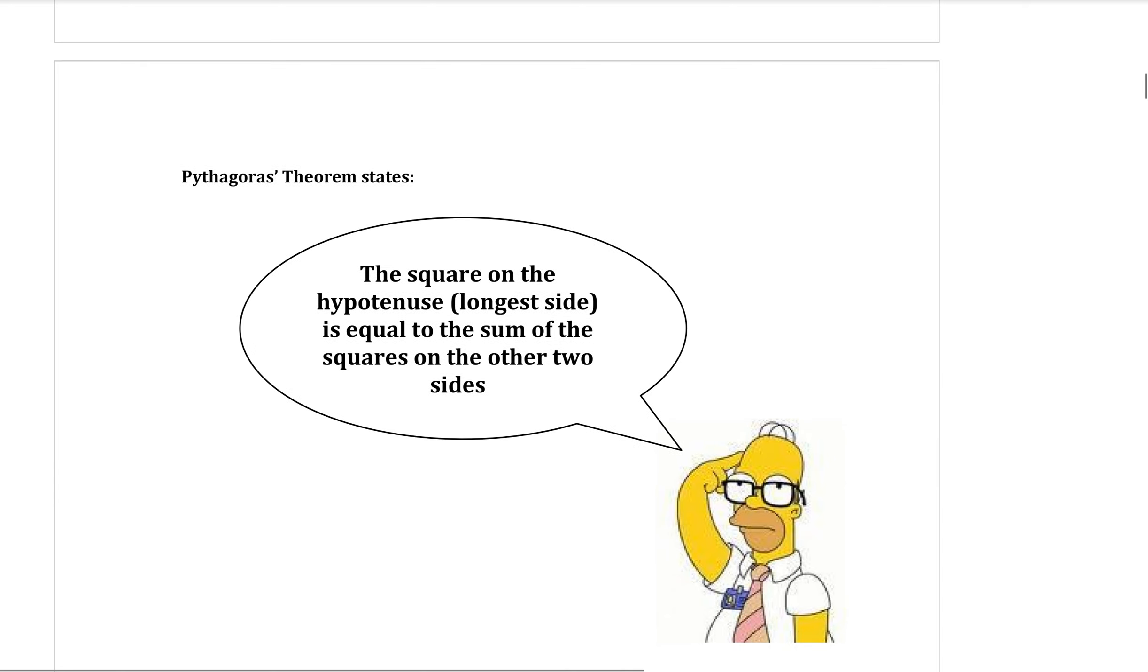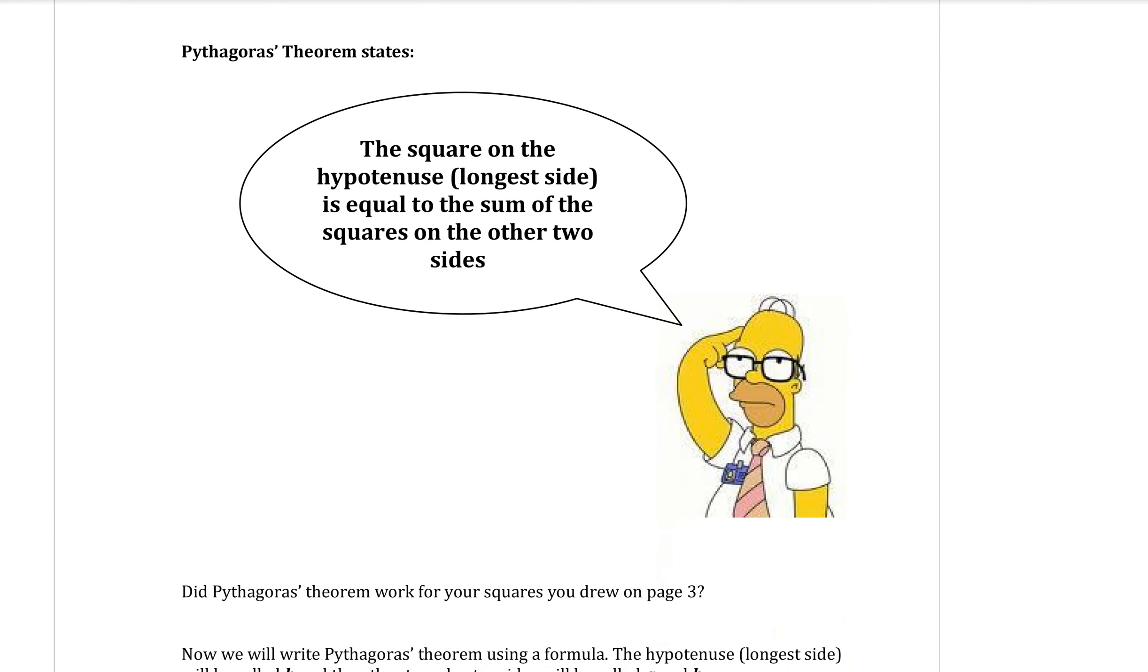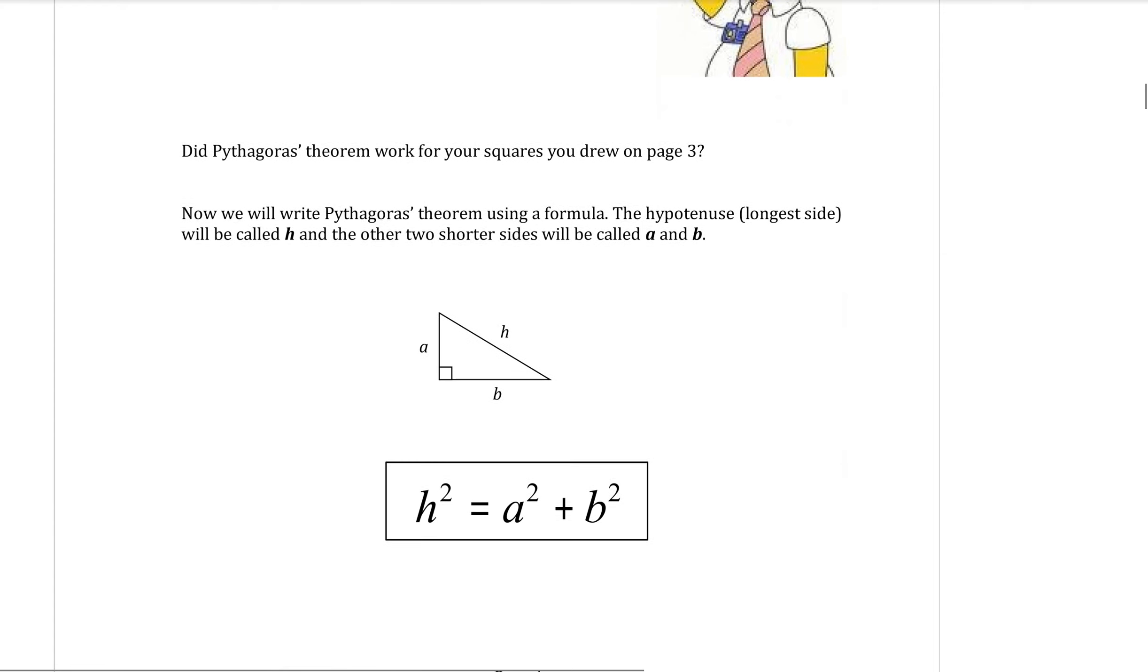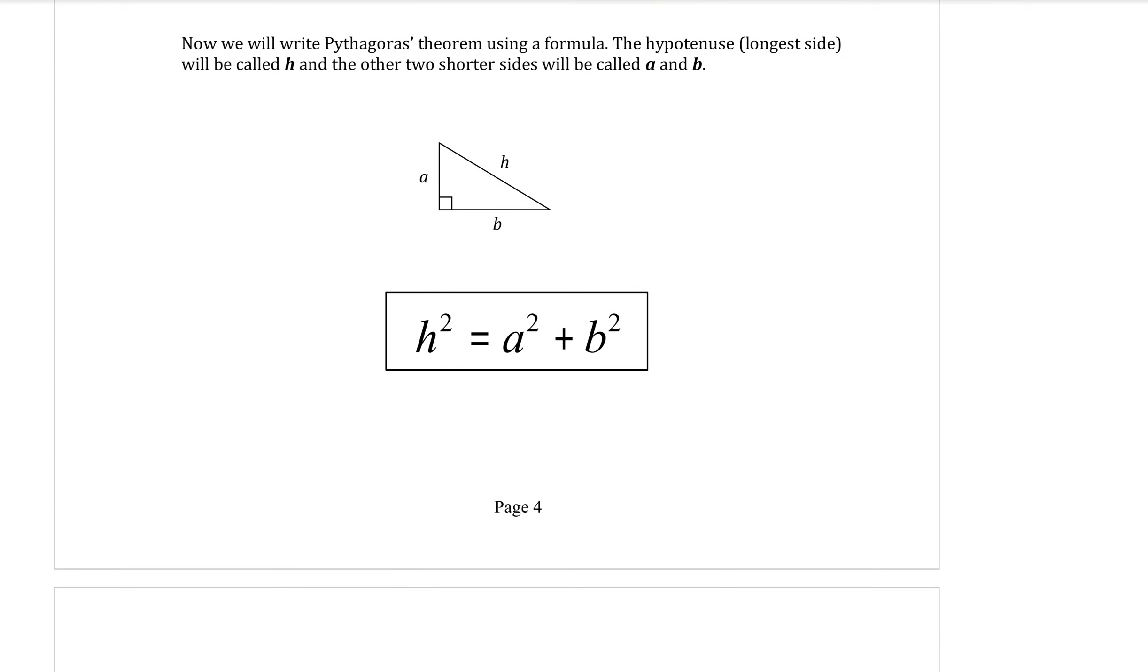So on the next page, we've got Homer here being very smart because he knows Pythagoras' theorem. And here is the rule written down for you. If this is our right-angled triangle with the arms a and b, h being the hypotenuse, Pythagoras' theorem is the hypotenuse squared equals a squared plus b squared.